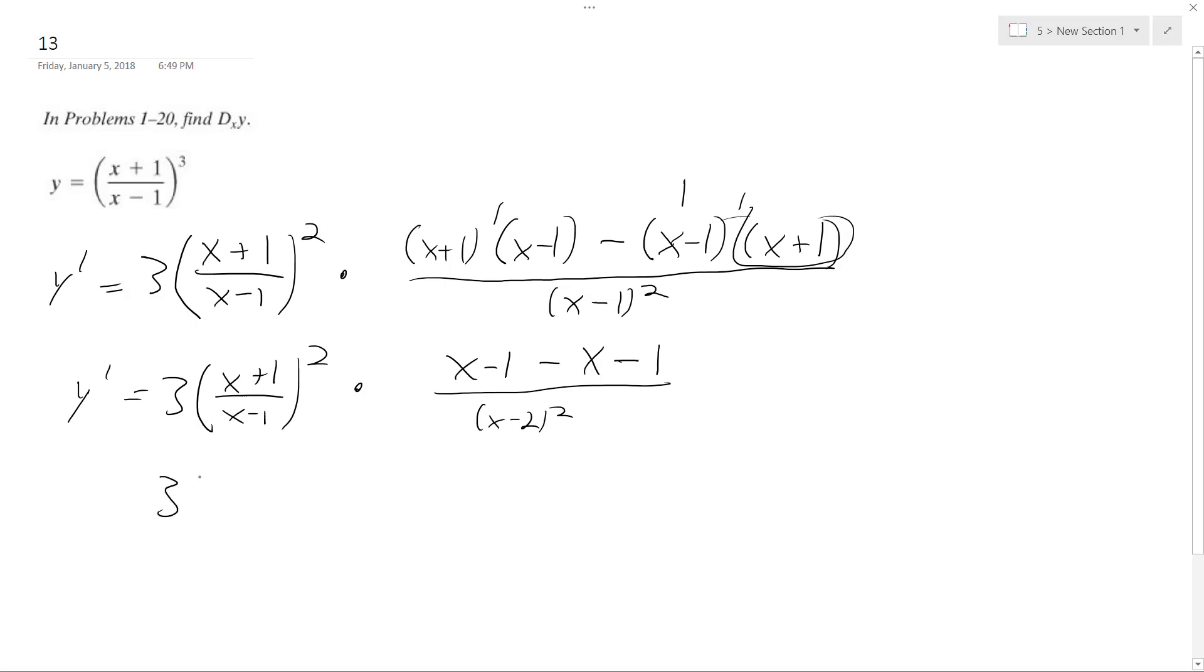So 3, you can think of this as x plus 1 squared over x minus 1 squared. I don't know why I put 2 down there, it should be 1. So I have common denominators now, so x's cancel out, we get minus 2, so it becomes minus 2 all over x minus 1 squared.